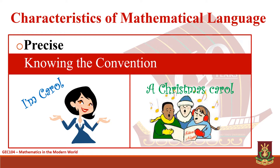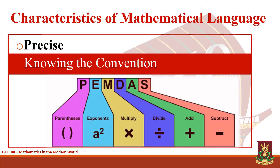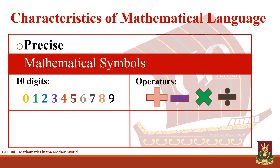Mathematics also has its conventions which help readers distinguish between different types of mathematical expressions. Mathematical conventions are a set of facts, names, and notations which are widely used in the area of mathematics. A popular example of a mathematical convention is PEMDAS, which serves as a guide in performing arithmetic operations. Majority of mathematical names and symbols are conventional because they have been used by math practitioners for many years. Mathematical symbols are used to refer to certain quantities, concepts, and ideas. Some of the commonly used mathematical symbols are the 10 digits, the operators, the variables, and the Greek letters.